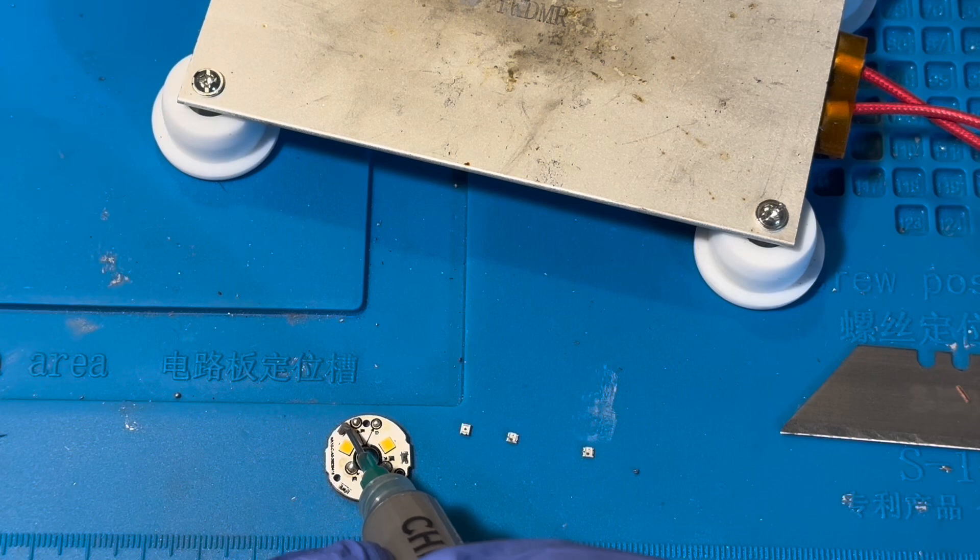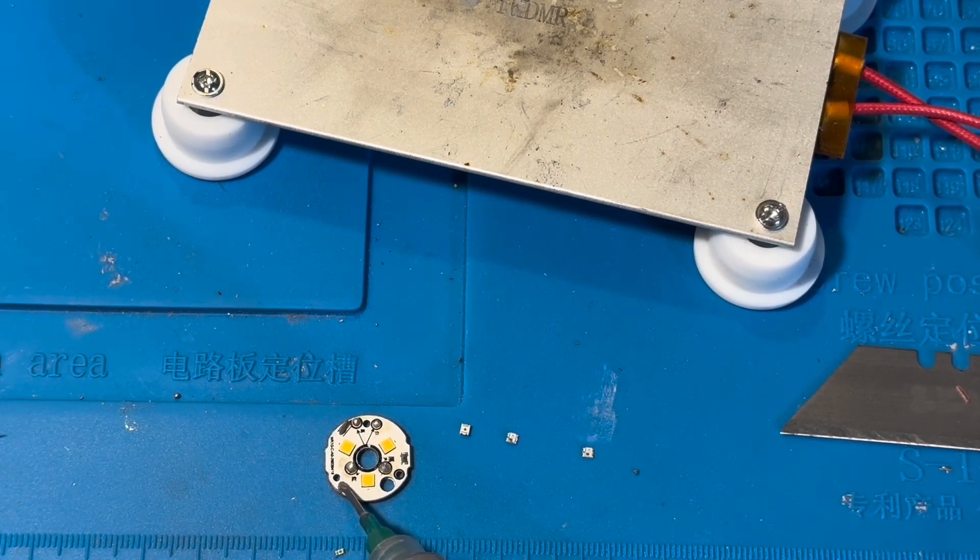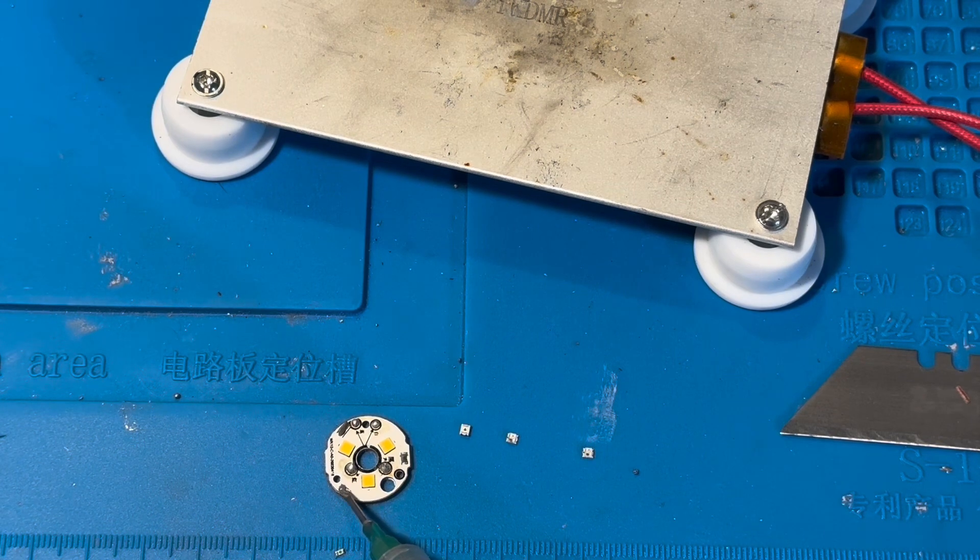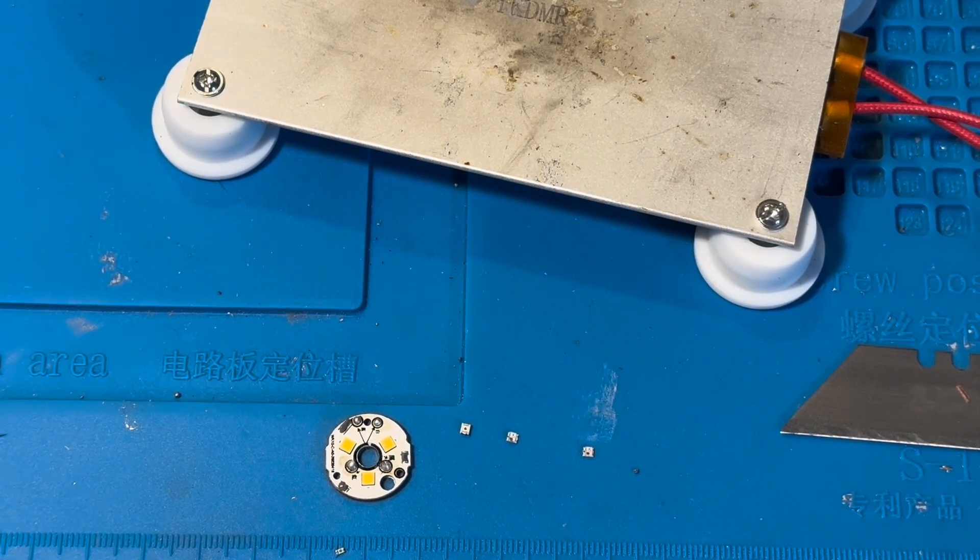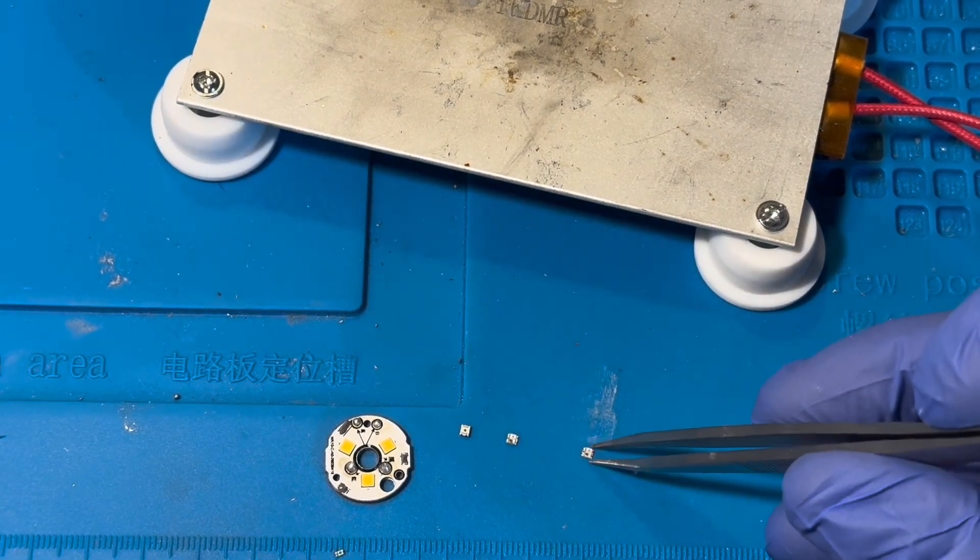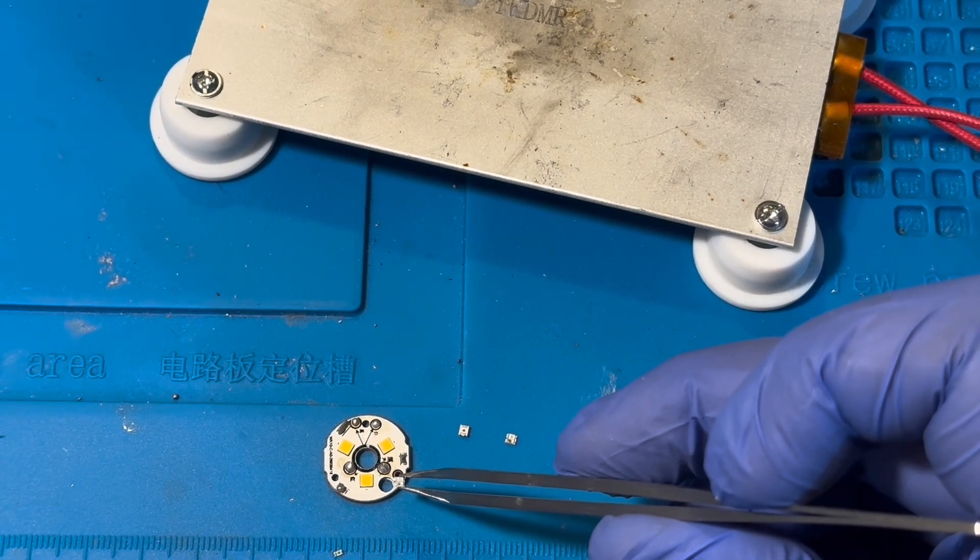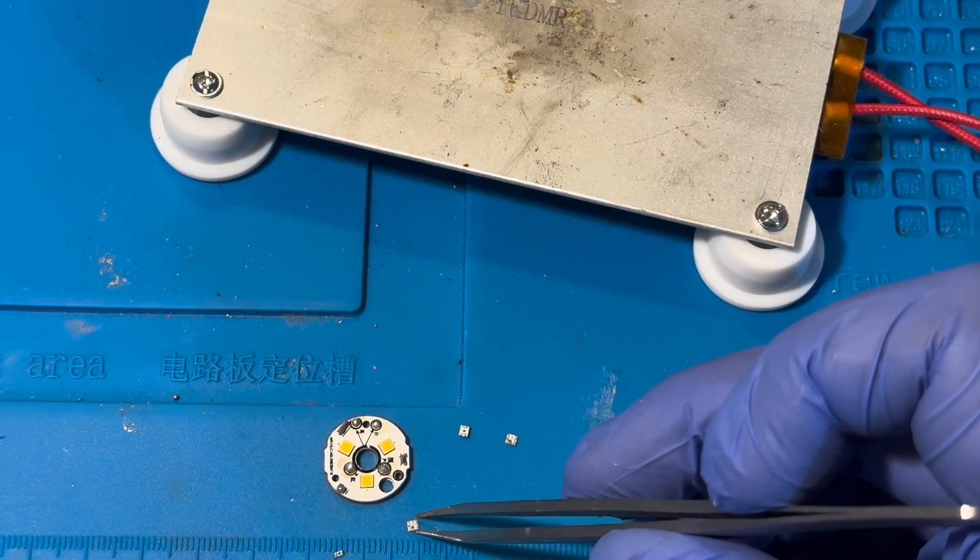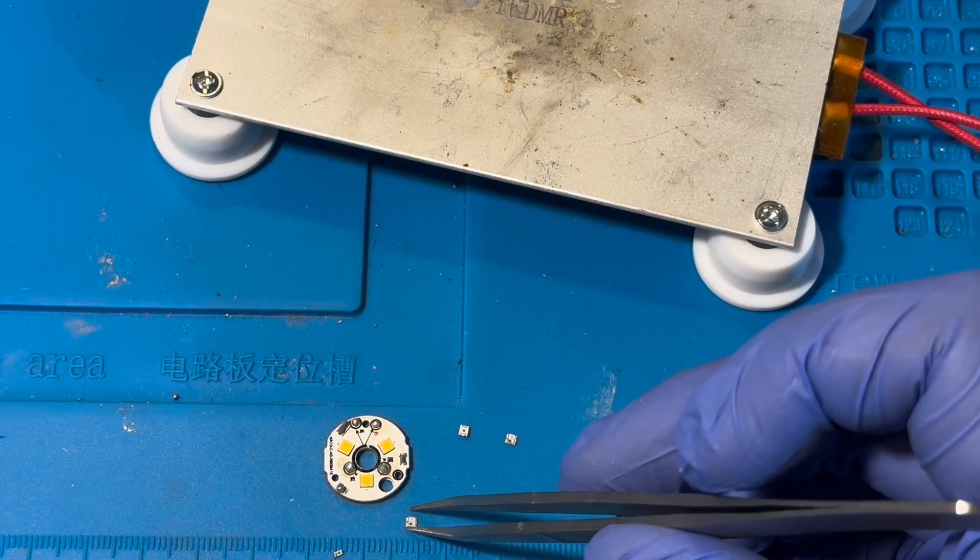So, I put the solder paste on the MCPCB. And I don't know if that kind of screwed it up. But I had trouble getting these to stick to their connects. So, maybe next time I'll put the solder paste on the bottom of the actual LEDs.